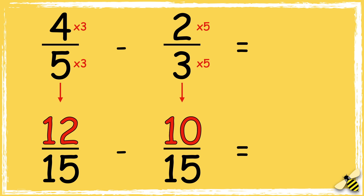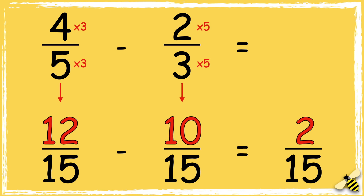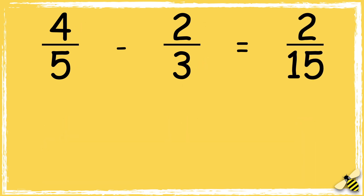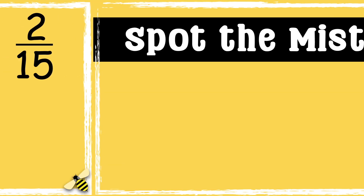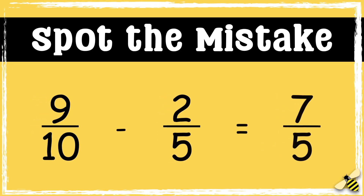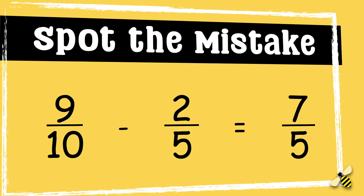Now that our denominators are the same, we can subtract the numerators. 12 take away 10 equals 2, so the answer is 2/15. Now it's your turn — these fractions have been subtracted incorrectly. Can you spot the mistake that's been made? Let me know your answers in the comment section.